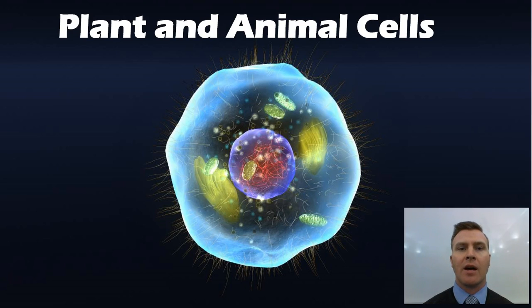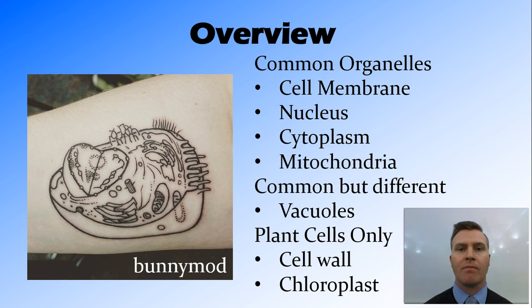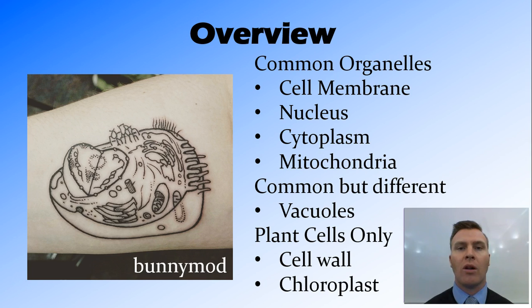In this video we're going to look at the similarities and differences between plant and animal cells. To do this we're going to look at the organelles found in those cells — the ones common to both plant and animal cells being the cell membrane, nucleus, cytoplasm, mitochondria, and vacuoles, which are common but a little bit different, and the ones only found in plant cells being the cell wall and chloroplasts.